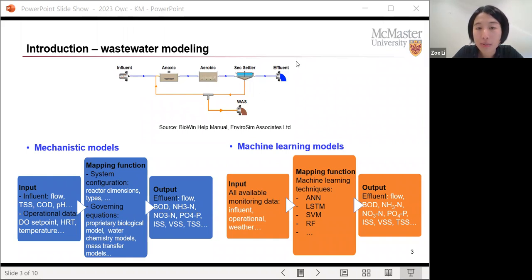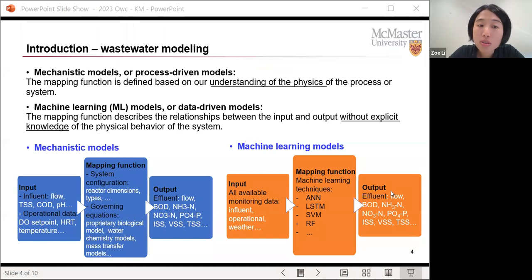And then collect some corresponding effluent data. And then we can use machine learning techniques to build the input output relationship. And then after using a certain amount of data to train the input output relationship, we can then get a machine learning model for output prediction. So that's the big difference between mechanistic model or often called process driven model versus the machine learning model or often called data driven model.